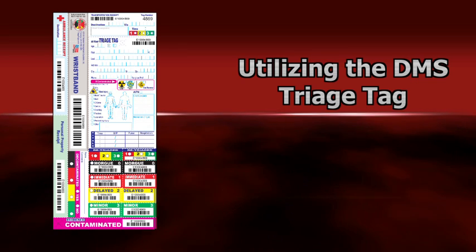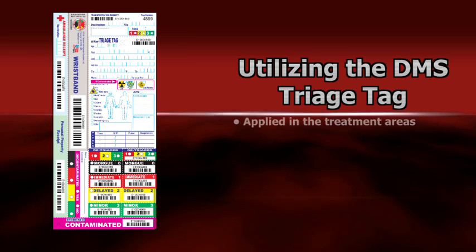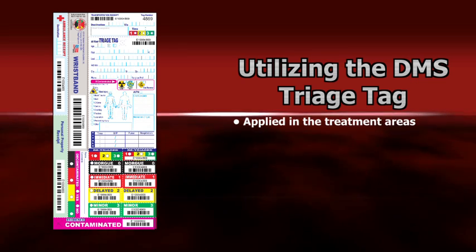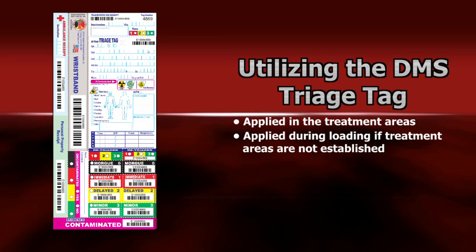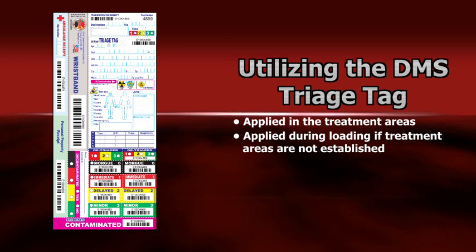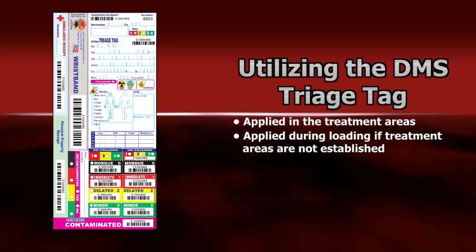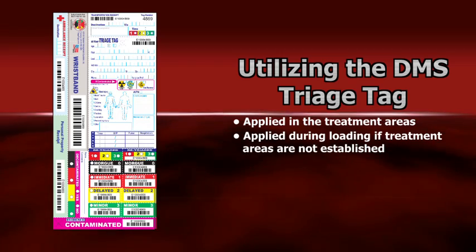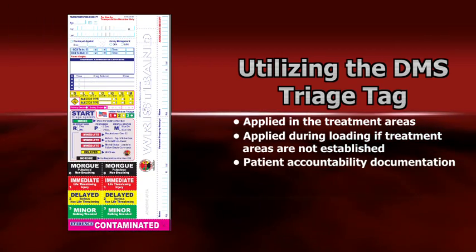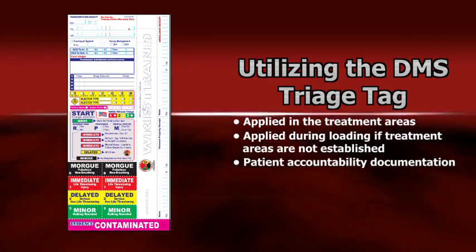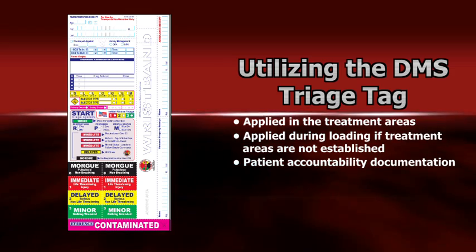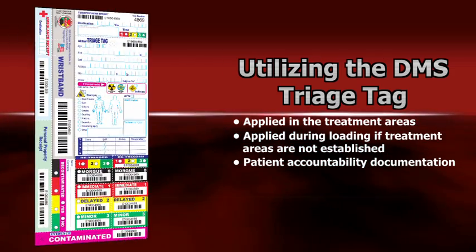Triage tags are applied to patients as they enter the treatment area after quick secondary triage to confirm or change their acuity category. If treatment areas were not established, the triage tag is applied to the patient just prior to transport. Properly utilized, the DMS triage tag provides patient accountability and tracking through the treatment and transport process.